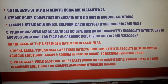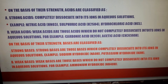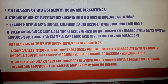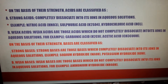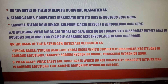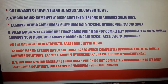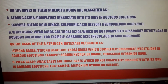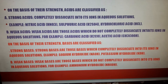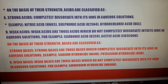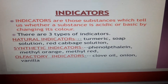Acids dissociate to form H+ ions and bases dissociate to form OH− ions. Now, suppose I give you an acid and a base and I don't tell you which is which — how are you going to find out? You won't test it directly because they might be corrosive. So, how do you find out whether the given solution is an acid or a base? We are going to find out with the help of indicators.